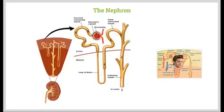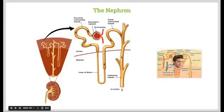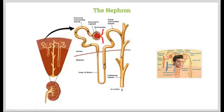From the capsule, the nephron loops down and back into the medulla. It leaves the Bowman's capsule into the proximal convoluted tubule, which is still contained within the cortex. Then we go down into the descending loop of Henle, back up into the ascending loop of Henle, which is located in the medulla, then back up into the cortex through the distal convoluted tubule, and then into the collecting duct, which carries the urine, nitrogenous waste, and anything we need to get rid of, down to the ureter, which then carries the urine to the bladder.